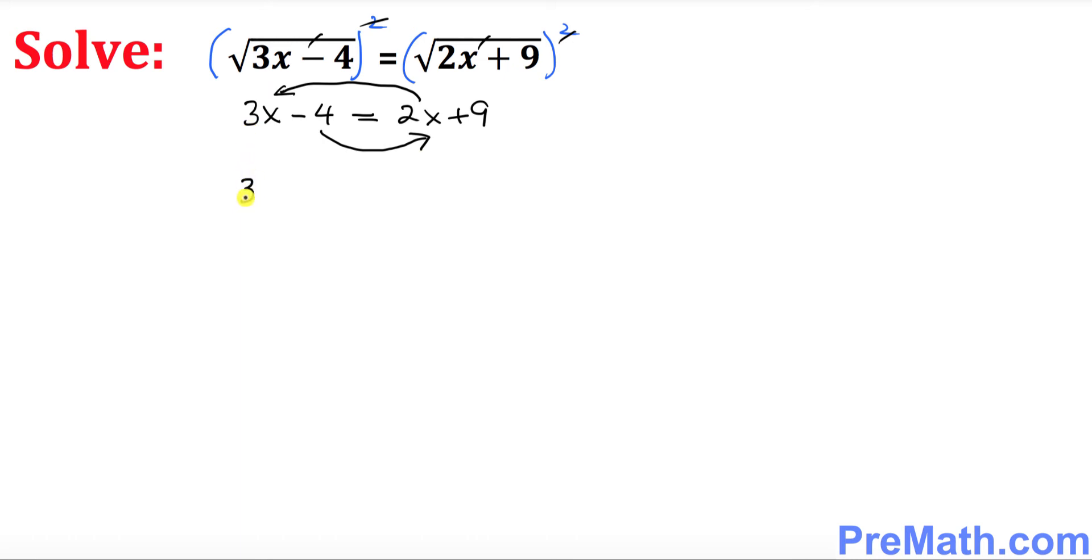So we already have a 3x over here. Once you move this 2x on the other side, drag and drop kind of thing, that's going to be minus 2x equals to we have a 9 on this side. When you move this negative 4 that becomes positive 4.